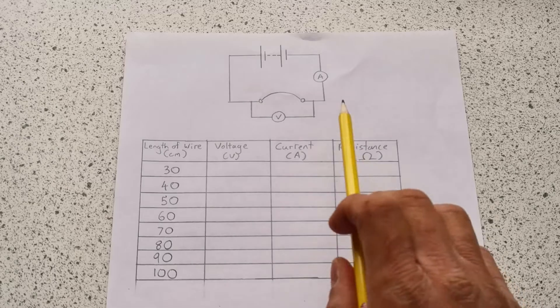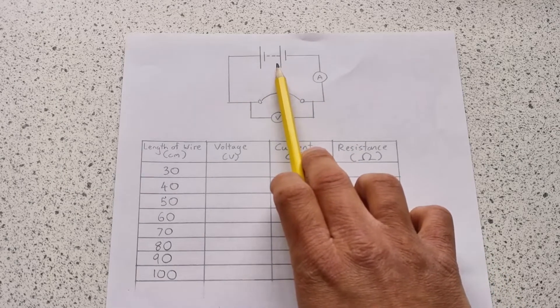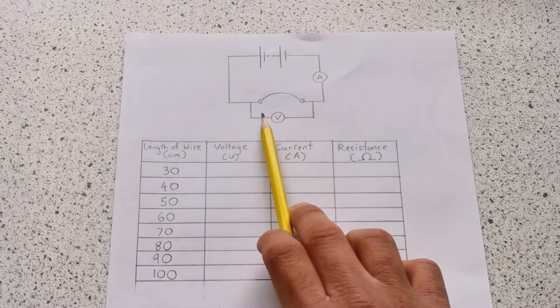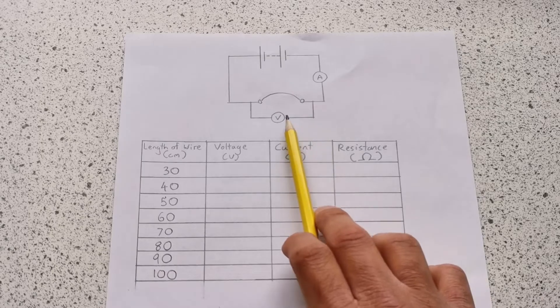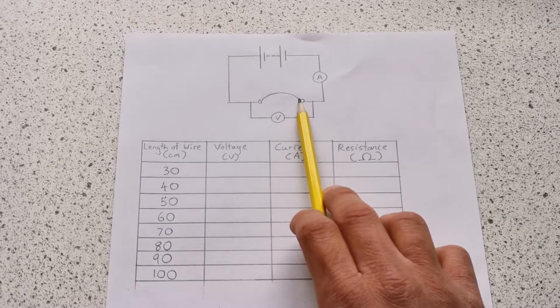So I'm going to be building this circuit here. As you can see we have a battery—I'm going to be using a power pack instead. We have an ammeter to measure the current, we have a voltmeter over the wire to measure the voltage, and then we have the wire itself. We're going to be changing the length of this wire.